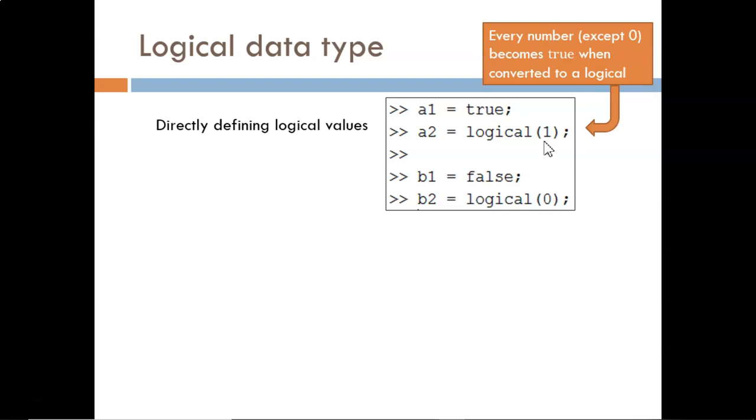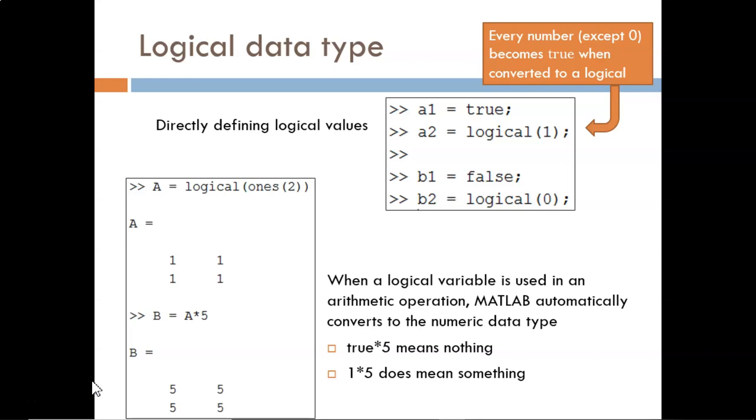Any other number would be converted to logical true, as seen with a2. In this next example, we first see how the logical function can convert an entire matrix. A now holds four separate true values. Then, we use A as part of this multiplication. Multiplication is an arithmetic operation, not a logical one. Five times true doesn't mean anything. There's no such thing as extra true. So, automatically and behind the scenes, MATLAB converts these four true values into numeric ones, and then does the multiplication. It is convenient for us that MATLAB has this capability to automatically adapt.